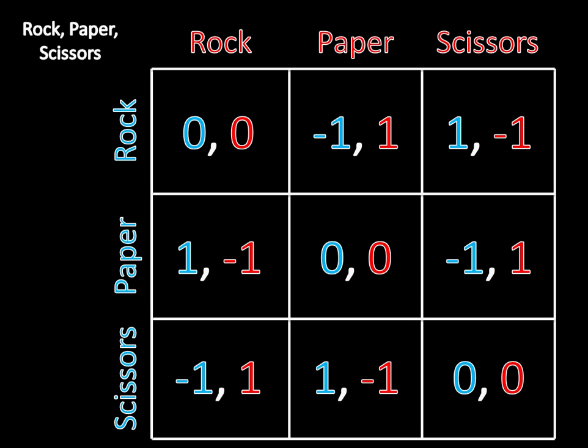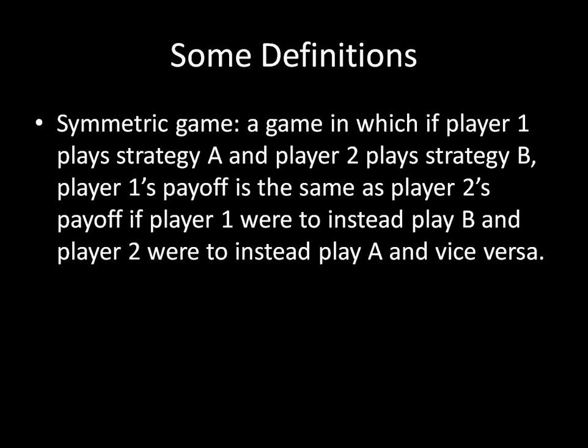The name zero-sum is very indicative of what's going on. The symmetric definition is going to be a little bit more complicated, but once you've actually seen an example, it's really straightforward what symmetry is supposed to be doing here. The definition for a symmetric game is a game in which, if Player 1 plays Strategy A and Player 2 plays Strategy B, then Player 1's payoff is the same as Player 2's payoff if Player 1 were to instead play B and Player 2 were to instead play A, and vice versa.